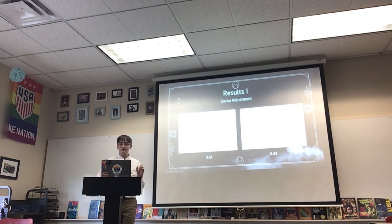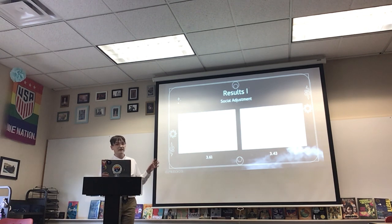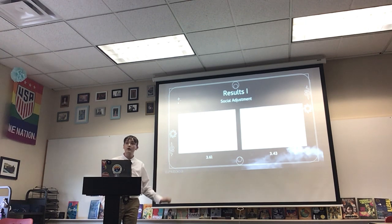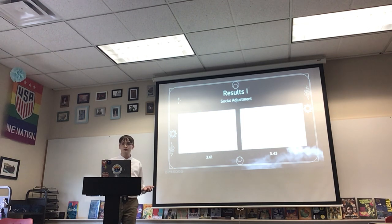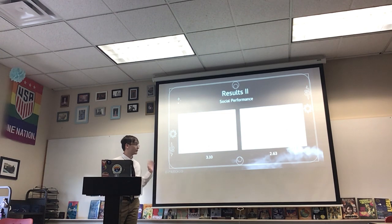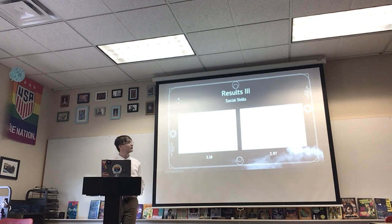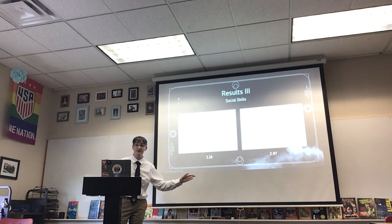So on to my results. There are a lot of numbers, so I'm going to try to keep it pretty simple. For the social adjustment aspect, the average score out of 5 for people who did not play D&D was 3.61, whereas for people who did, it was 3.43. By the way, the higher the number, the better it is for you socially — so 5 would be perfect and 1 would be the worst possible. For social performance, people who did not play D&D got an average score of 3.10, whereas for people who did play, it was 2.63. For social skills, the average for people who didn't play was 3.18, whereas for people who did, it was 2.97.